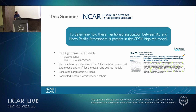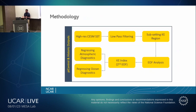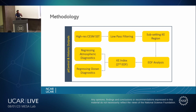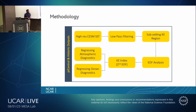The data have a resolution of one-quarter of a degree in the atmosphere and 0.1 degree in the ocean. For our methodology, we took the PI control and historic outputs. The high-res CESM SST was low-pass filtered because we already know large-scale variability is the reason for PDP-like patterns in the North Pacific atmosphere. We then subsetted the Kuroshio Extension region, conducted an EOF analysis, took the second EOF as the non-dominant EOF for the KE index, and regressed PI control and historic atmospheric and ocean diagnostics onto the Kuroshio Extension index.